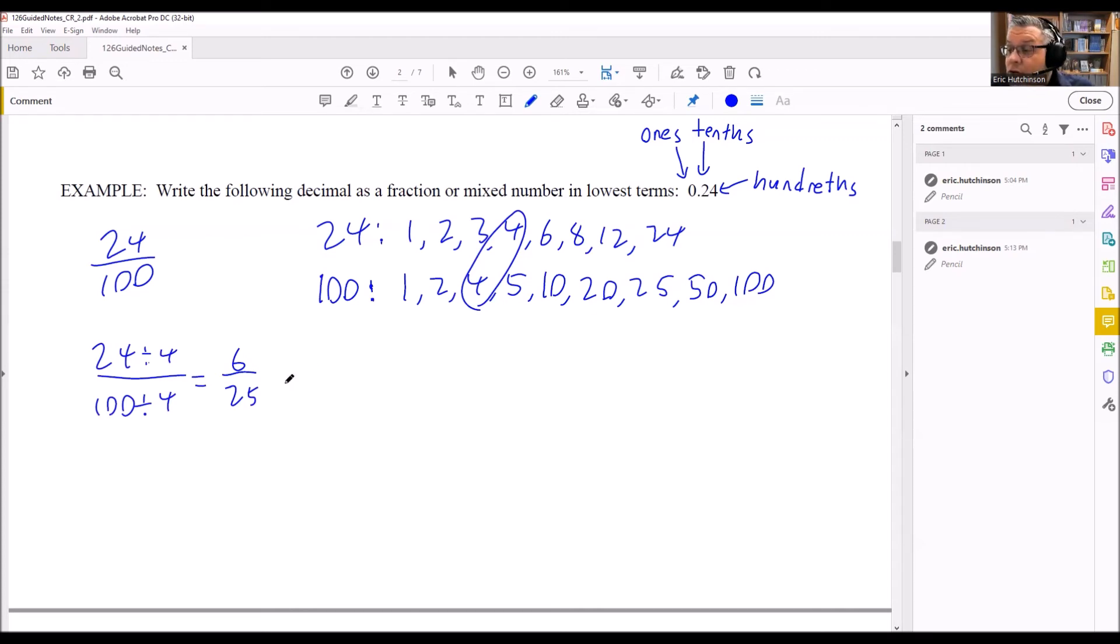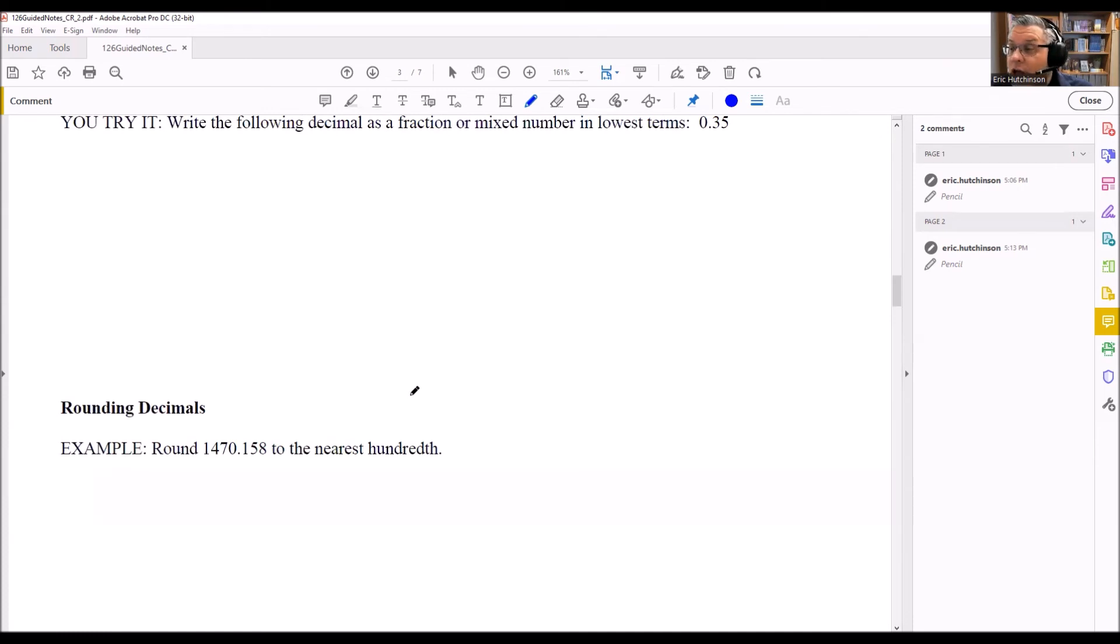That means if I were to put 6 divided by 25 on my calculator, I would get 0.24 as the answer. So we just changed the decimal into a fraction. Let's do another one of those.